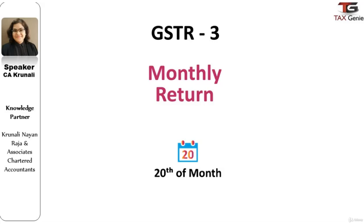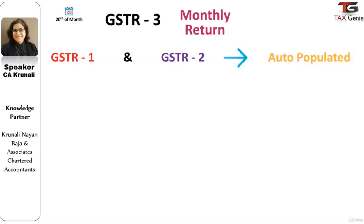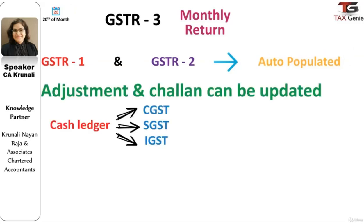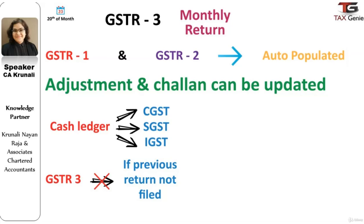GST Return 3 is a monthly return, and payment needs to be made as per the details furnished in GST Return 1 and GST Return 2. All the details in this return are pre-populated based on GST Return 1 and GST Return 2 already filed. A separate cash ledger needs to be maintained for CGST, SGST, and IGST. A registered taxable person shall not be allowed to furnish a return for a period if the return for any previous period has not been furnished.